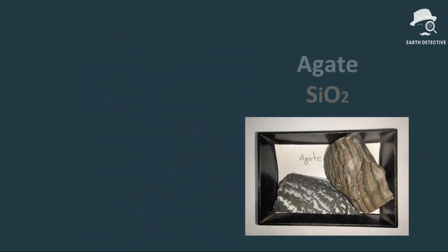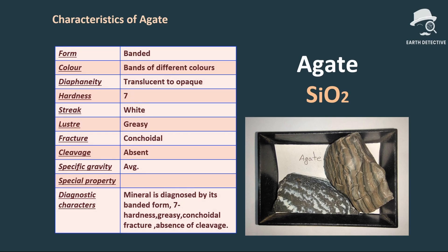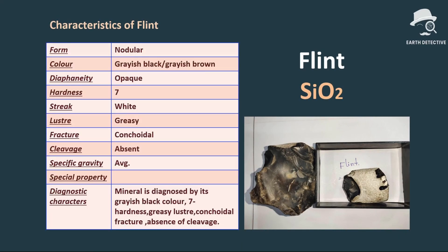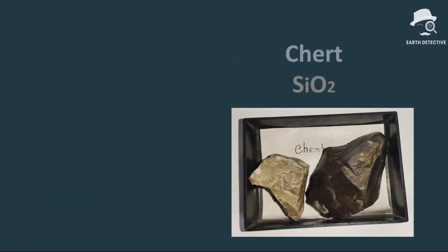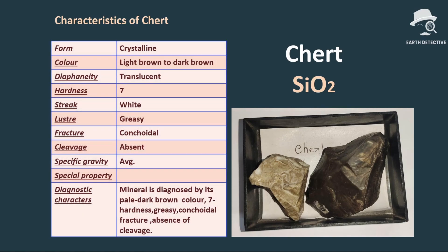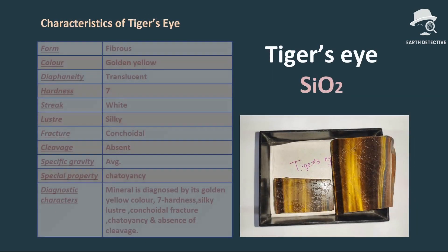Jasper has a brick red color, earthy luster, conchoidal fracture, absence of cleavage, translucent diaphaneity, and hardness seven. Agate is a beautiful banded mineral with bands of different colors; its diaphaneity is translucent to opaque, hardness seven, greasy luster, conchoidal fracture, and absence of cleavage. Flint can be diagnosed by its grayish-black color and nodular form; diaphaneity is opaque, hardness seven, white streak, greasy luster, conchoidal fracture, and absence of cleavage. Chert is identified by its light to dark brown color, translucent diaphaneity, hardness seven, white streak, greasy luster, conchoidal fracture, and absence of cleavage.